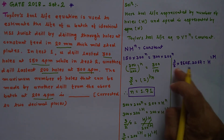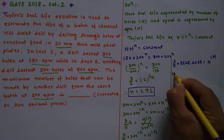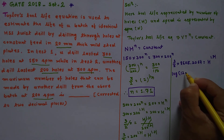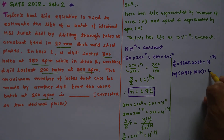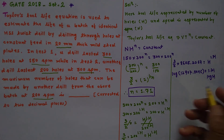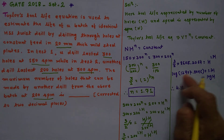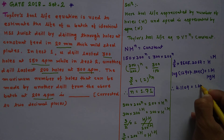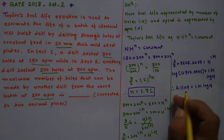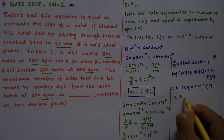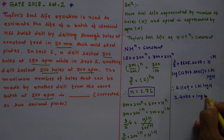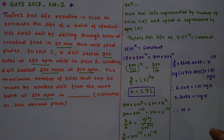Taking log on both sides and multiplying, we get log of 8605.2064, which is 4.1109, equals 1.71 × log H. Dividing both sides by 1.71 gives: log H = 2.4040.